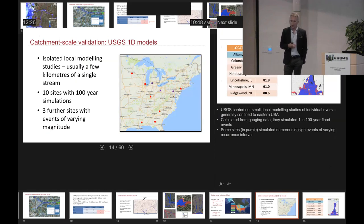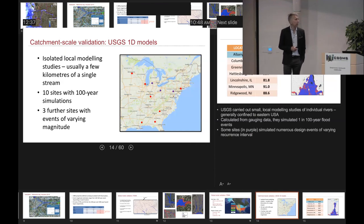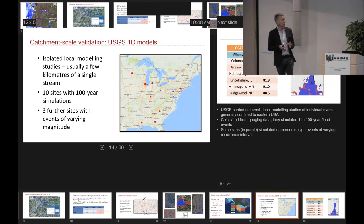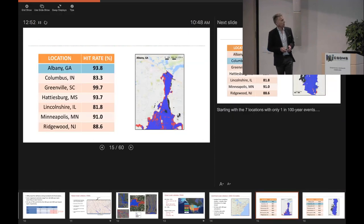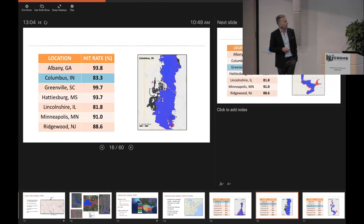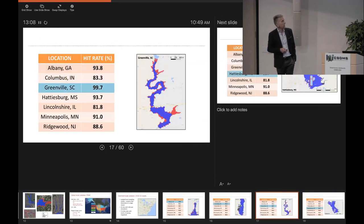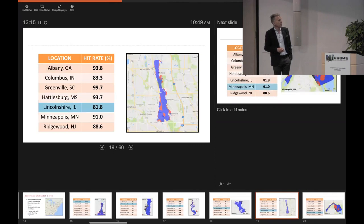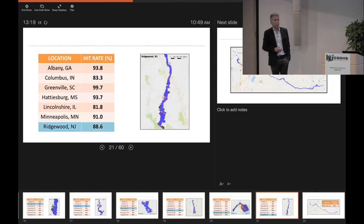The other way we've validated the continental model is to look at a number of locations where the USGS has built bespoke 1D and 2D models — probably built to a higher standard than FEMA studies with more care and attention. There are ten sites with 100-year simulations and three further sites with simulations of different return periods. The average hit rate here is about 92%. Albany looks really good; some places do less well, but it's still a coherent match.